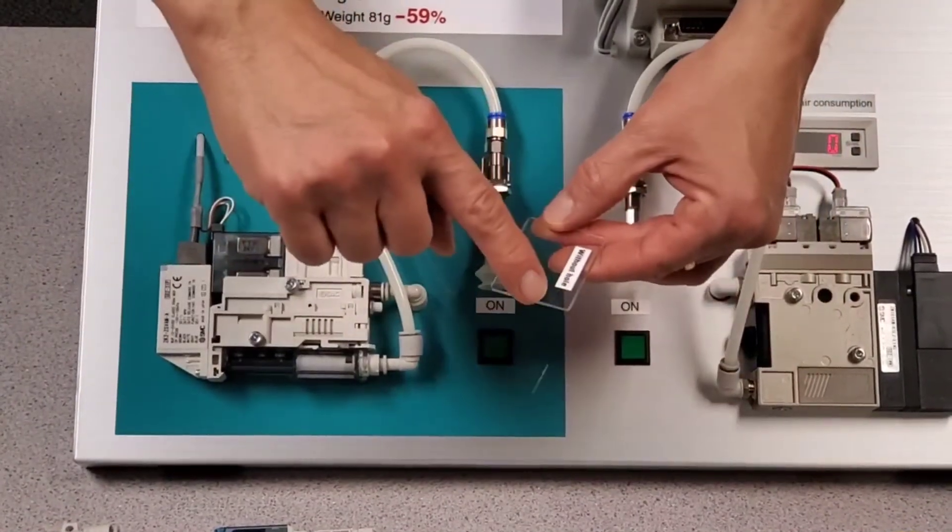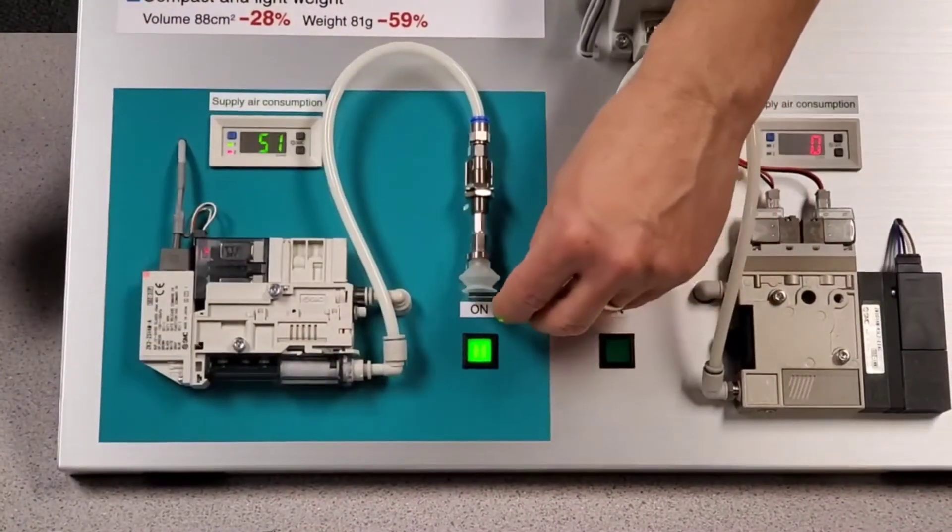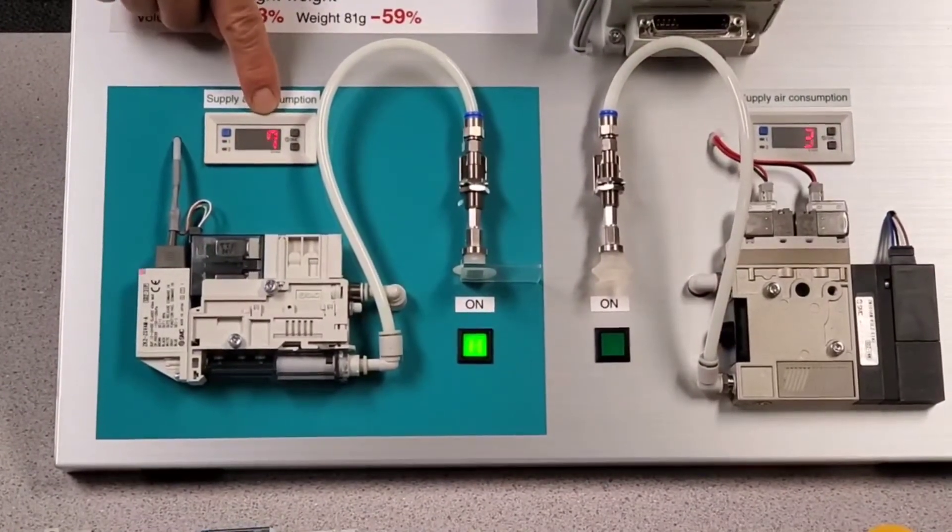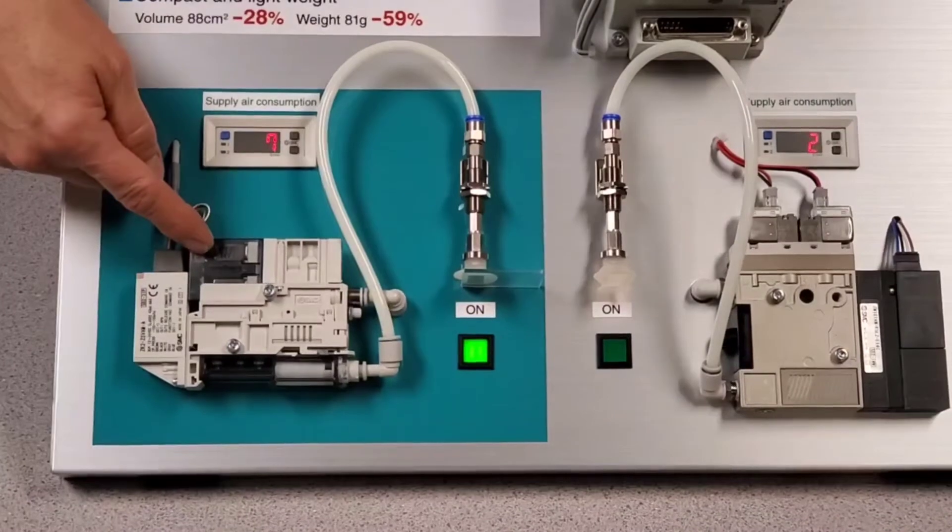I'm going to rotate the workpiece, putting the label partially over the vacuum cup, and you will see a slight amount of vacuum being read by the flow meter.